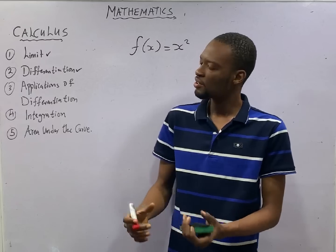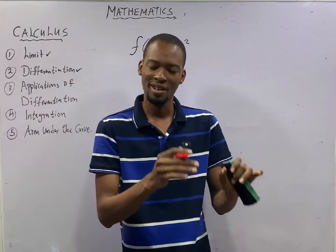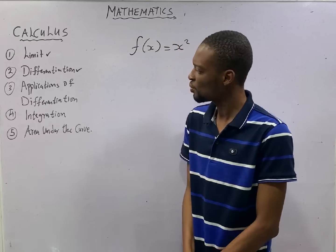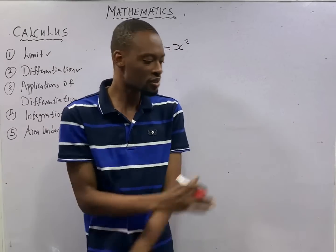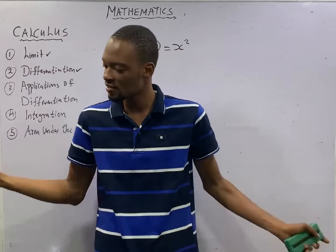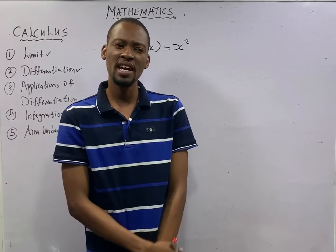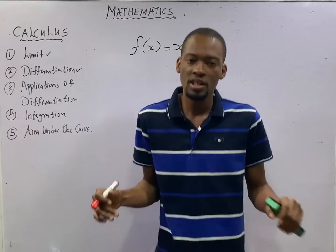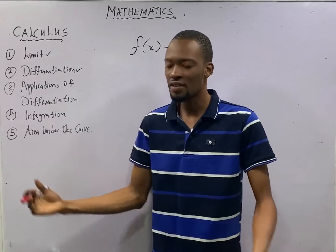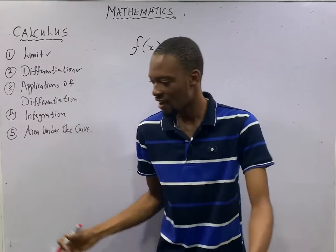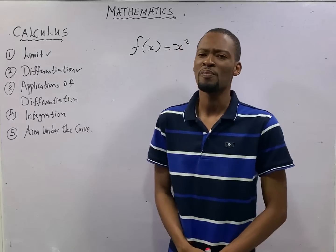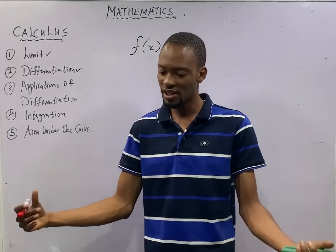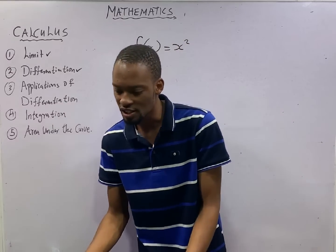Differentiation and integration are words and opposites. Imagine when your dad is not at home — you scattered everything, books everywhere. Then you hear a horn: dad is coming. Now you try to arrange everything, put everything together. So you differentiated it. To get back what you differentiated, you integrate.